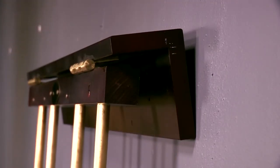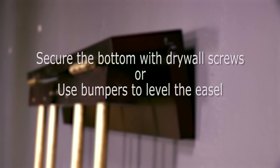Lift easel and hang on the bracket that is attached to the wall. You can secure the bottom with drywall screws or use bumpers to level the bottom of the easel with the top to keep the easel from swinging in and out from the wall while working.